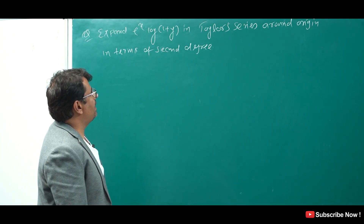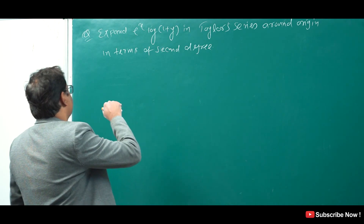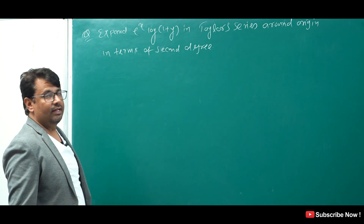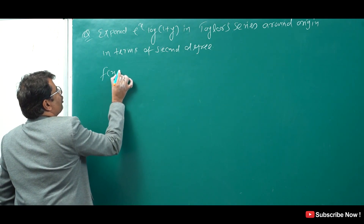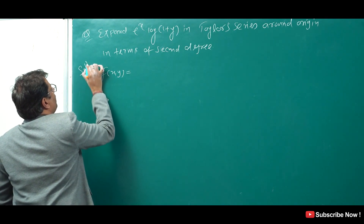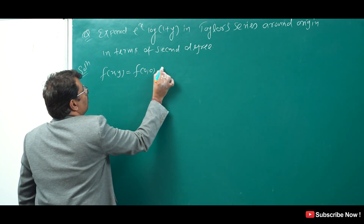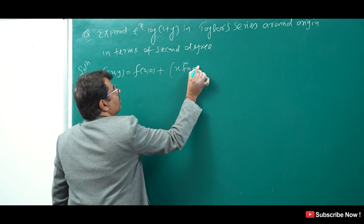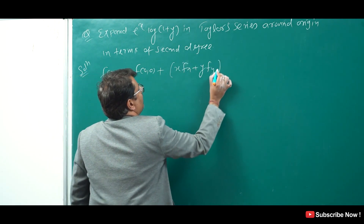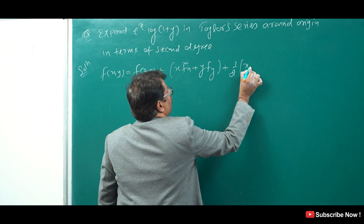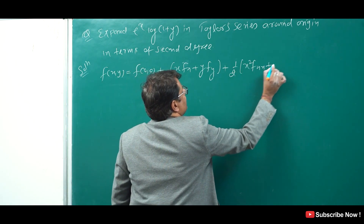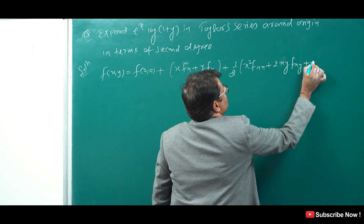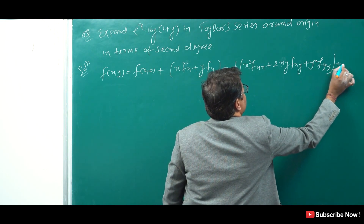Expand x log(1 plus y) in the Taylor series around the origin in terms of second degree. So you have to expand up to second degree and origin is given. The McLaurin series formula is: f(0,0) plus x fx plus y fy plus 1 by 2 factorial times (x square fxx plus 2xy fxy plus y square fyy).